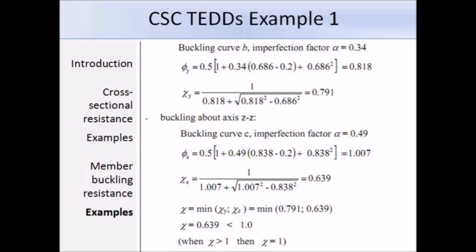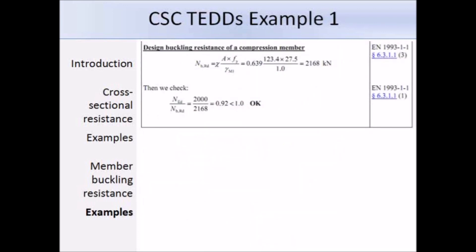We can then use this to work out the reduction factor chi, which works out as 0.869. For the z-z axis we use buckling curve C with alpha equals 0.49. We get phi equals 1.002 and chi equals 0.613. We need to take the minimum value of chi, so in this case that would be 0.613, and that is less than 1. We use this value 0.613 in our expression for the design buckling resistance and we get a value of 2160 kN. Compare this to our design compression force of 2000 kN, and you can see that this section has more than enough resistance and can be adopted.